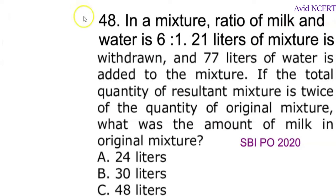Hello viewers, welcome to my channel. This is Geeta. In a mixture, ratio of milk and water is 6:1. 21 liters of mixture is withdrawn, and 77 liters of water is added to the mixture. The total quantity of resultant mixture is twice the quantity of original mixture. What was the amount of milk in the original mixture?